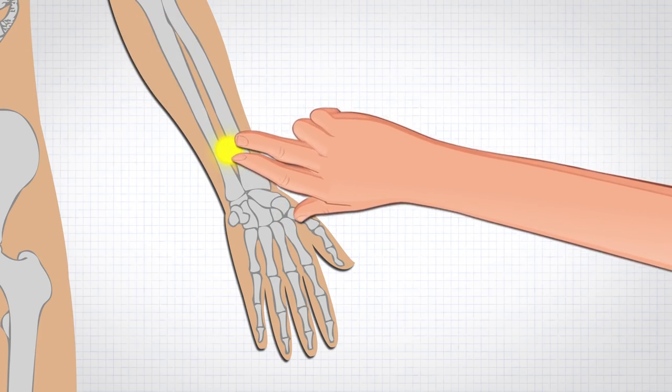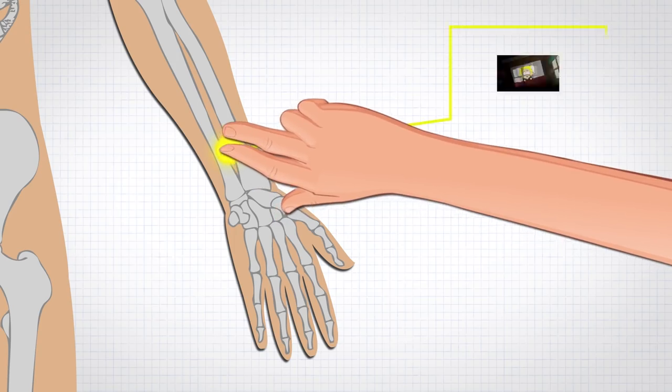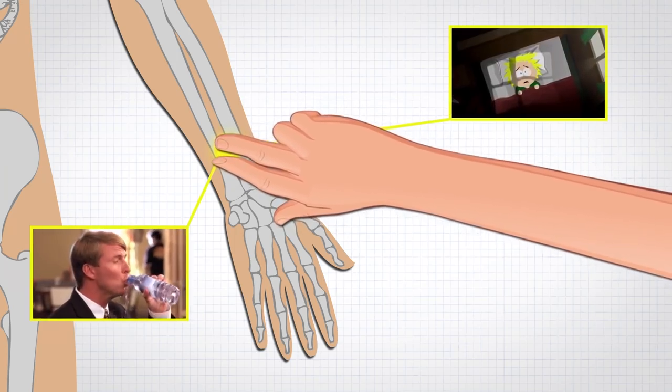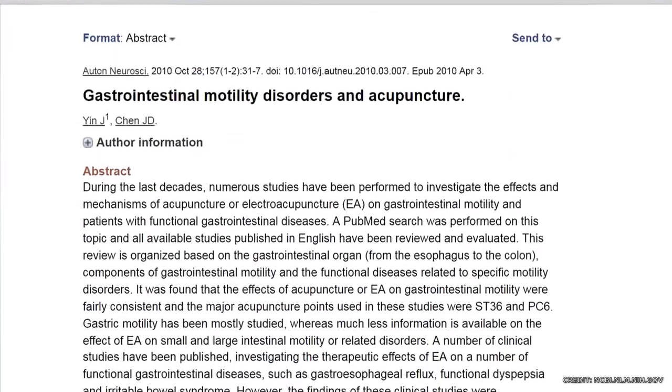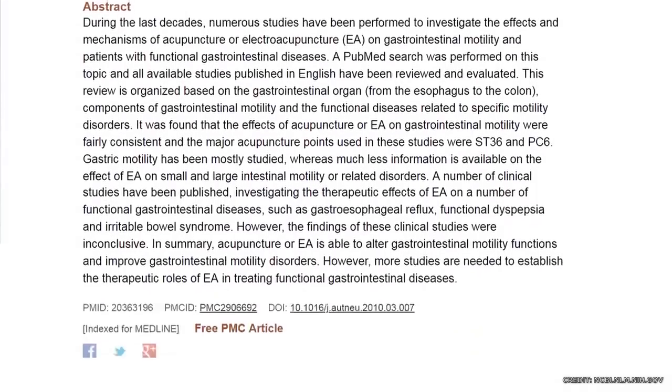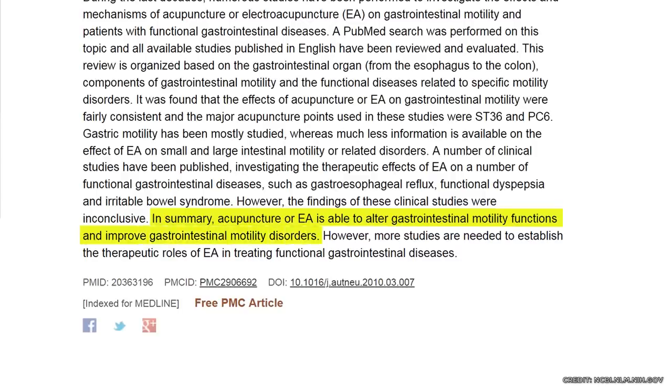Another advantage of acupressure in this point is reduced occurrences of insomnia and nervousness. Several research studies have demonstrated this effectiveness of PC6 stimulation in reducing nausea and vomiting. The Journal of Autonomic Neuroscience concluded that this point was efficient in maintaining healthy gastrointestinal movement. Another study found it helpful in relieving stubborn hiccups.